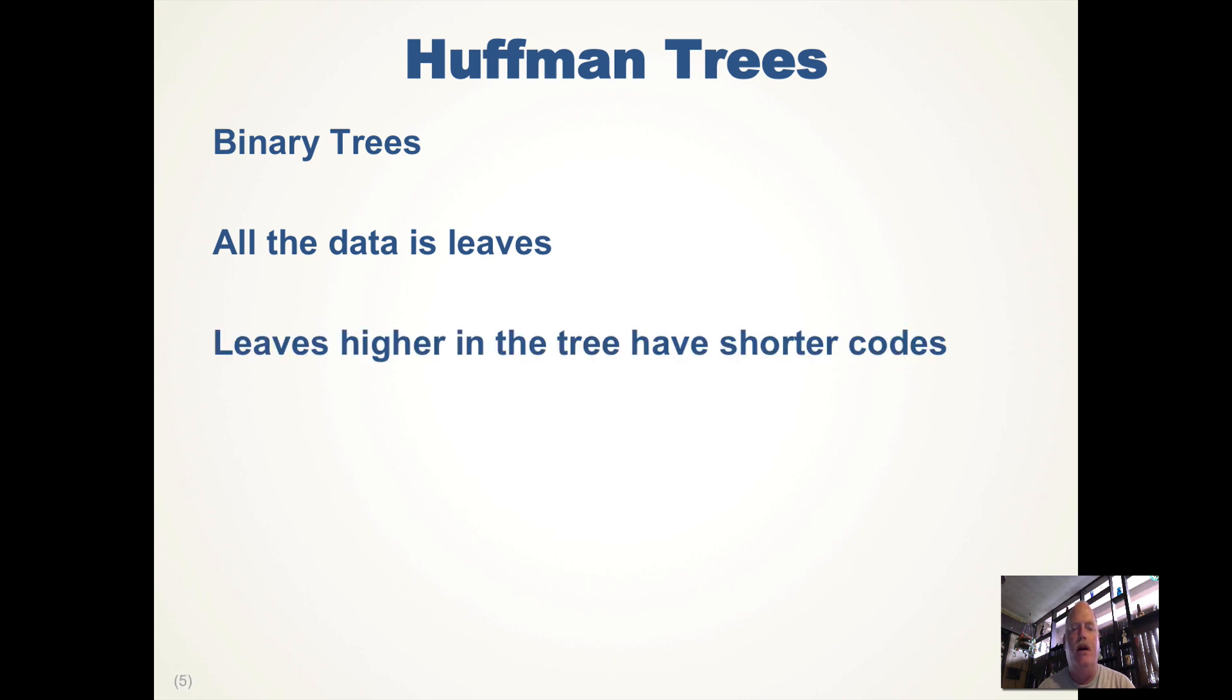The leaves higher in the tree have shorter codes because the traversal to the leaf is the code. Basically, the code is based upon the traversal from the root to the leaf.